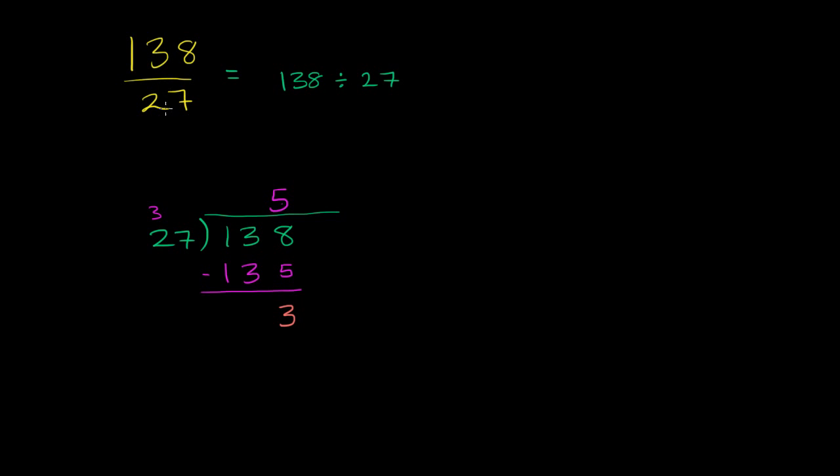And if we wanted to convert this right over here to a decimal, we could keep dividing. We would divide 27 into 3. But we just want to convert this into a mixed number. And we're essentially done.